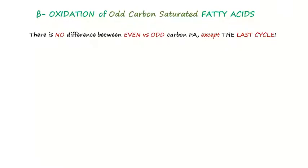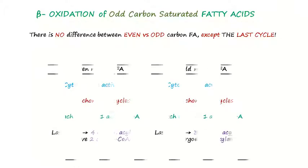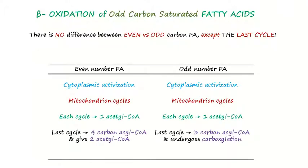Except the last cycle. We have the same cytoplasmic activation, the same mitochondrion cycles, and each cycle produces one molecule of acetyl-CoA. In the last cycle of even number fatty acid, there will be a four-carbon acyl-CoA which produces two molecules of acetyl-CoA, while in the last cycle of odd number fatty acid, there will be a three-carbon acyl-CoA which will undergo carboxylation.